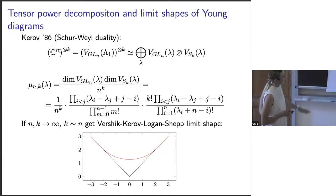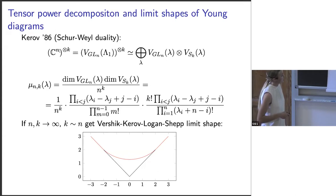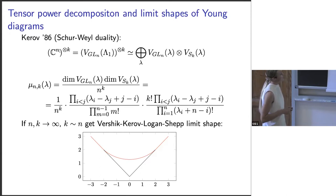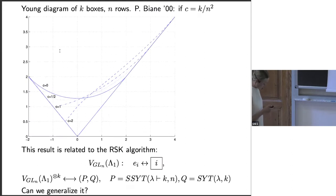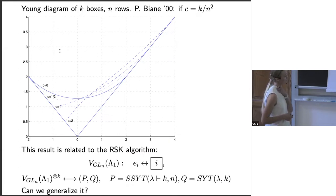This is known for a long time, but let me also remind you that in the case of Howe duality, we can introduce a measure on Young diagrams. The dimensions of the symmetric group and GL_m representations can be expressed using row lengths of λ, and in the limit where k and n are proportional, we get the famous Vershik-Kerov-Logan-Shepp limit shape. We would like to do the same for other dual pairs.